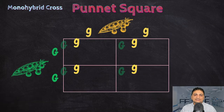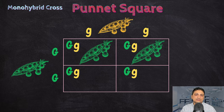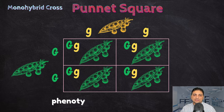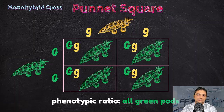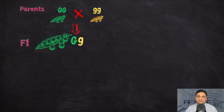Now let's talk about phenotypic ratio. Since all individuals in the F1 generation have the green allele and the yellow allele, and the green allele is dominant over the yellow allele, all the offspring will be green pod color because green is dominant over the recessive yellow allele. In the F1 generation all the plants are green and they are heterozygous for the trait, meaning they have both the green allele and the yellow allele.